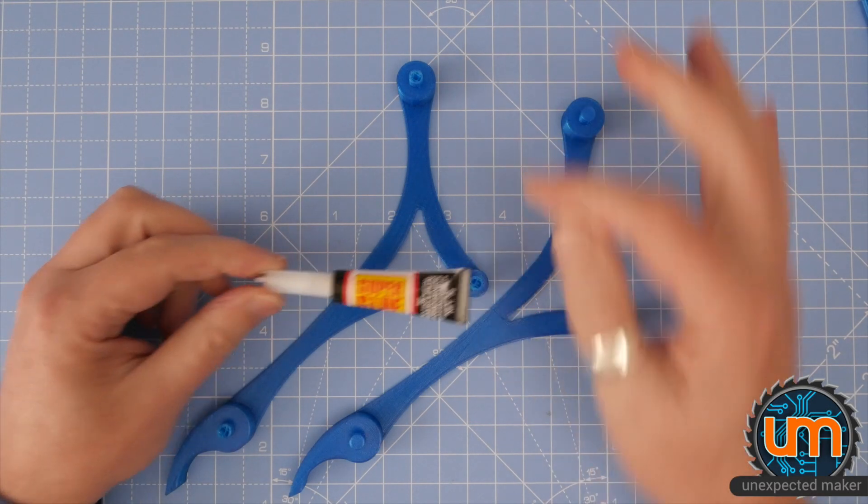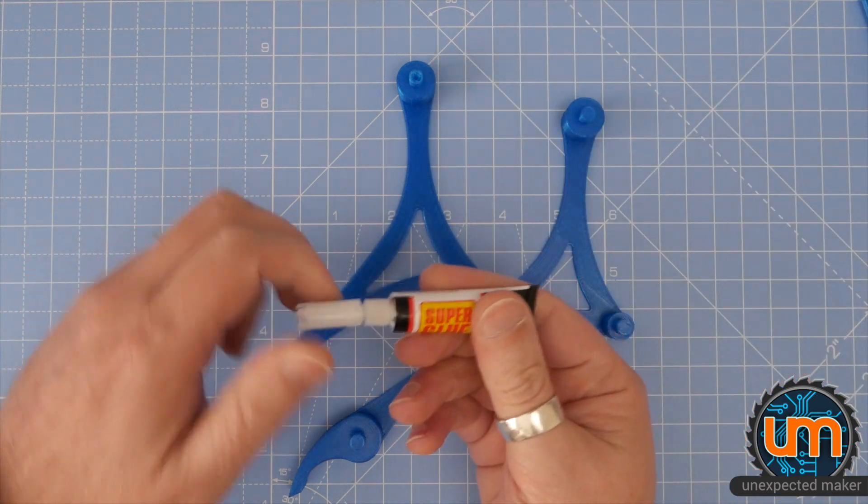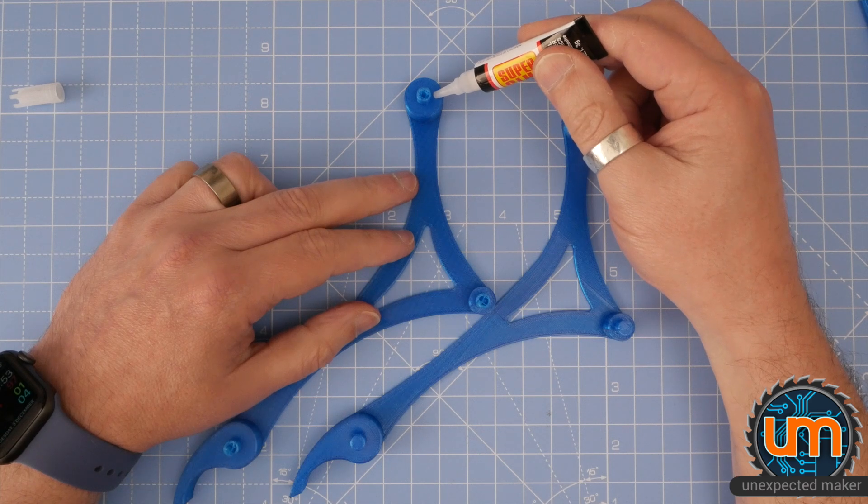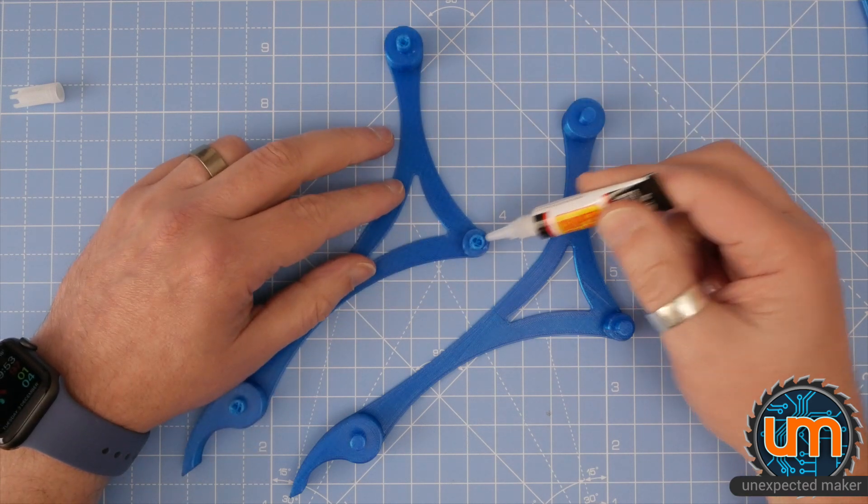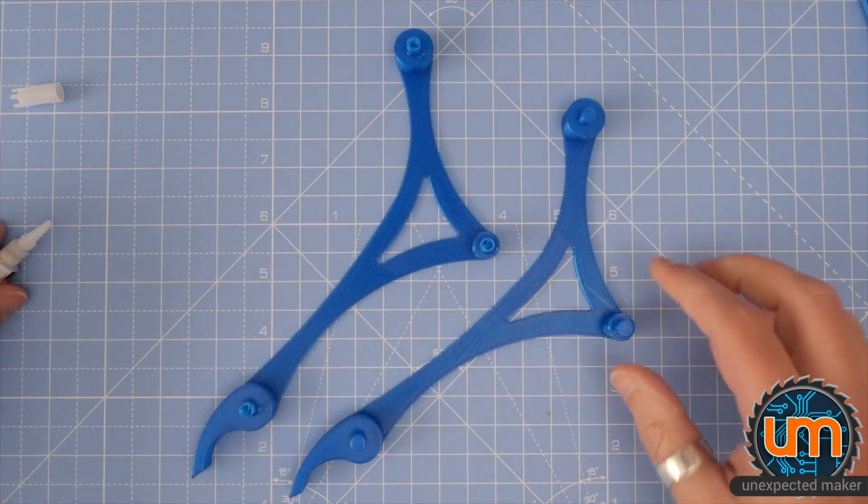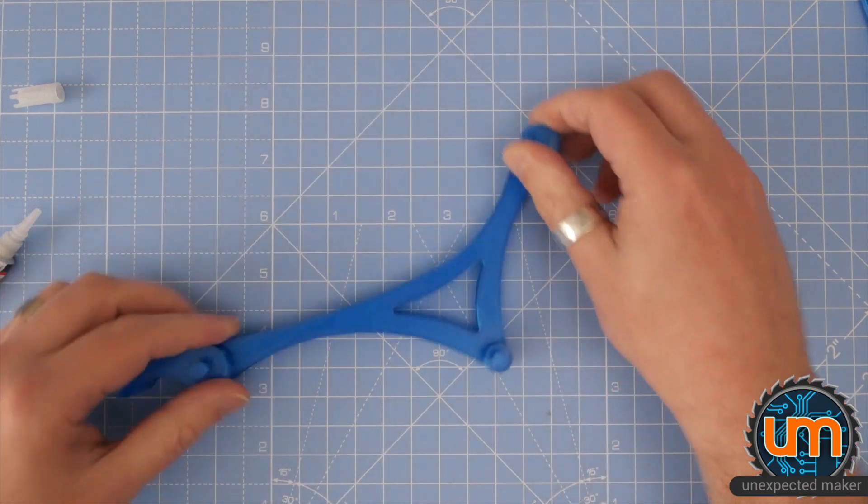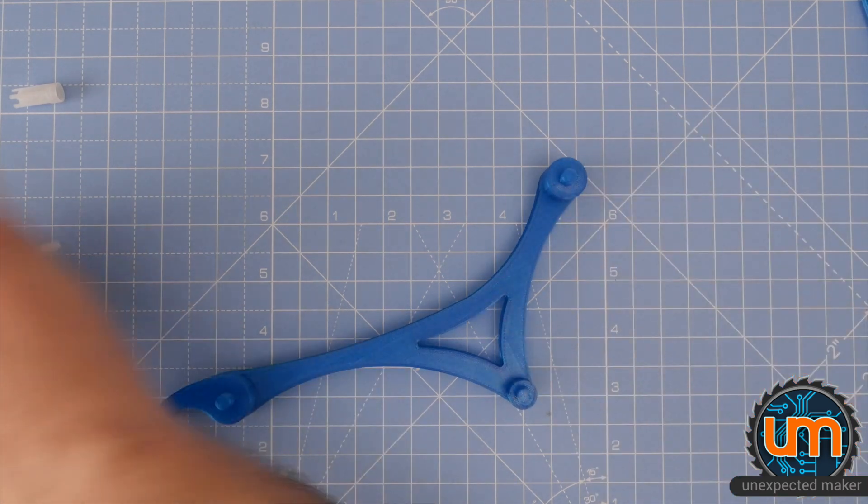So my plan is to just use some super glue, little drops, to hold it together. Assuming this hasn't dried up, because it doesn't last very long once it's been opened. Nope, it's still wet. Awesome. I'm just going to put a drop on each section, hopefully get it together before it dries. And move on to the next one.